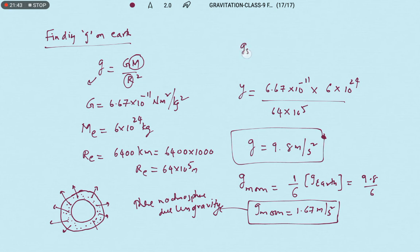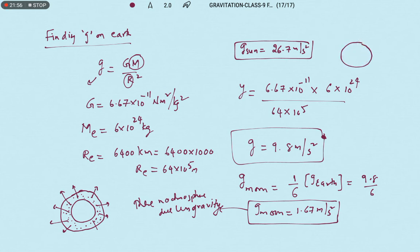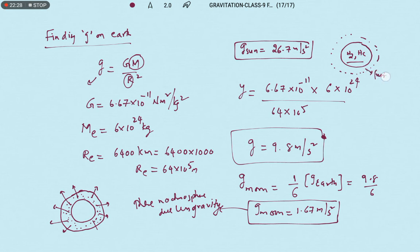What will be the acceleration due to gravity of the sun? It is nearly 26.7 m/s². Because of this greater acceleration due to gravity, the sun is able to trap even very light gas molecules like hydrogen and helium. About 90% of the sun's energy comes from hydrogen and helium — hydrogen molecules combine at high temperatures in a reaction called nuclear fusion, giving energy continuously for millions of years.